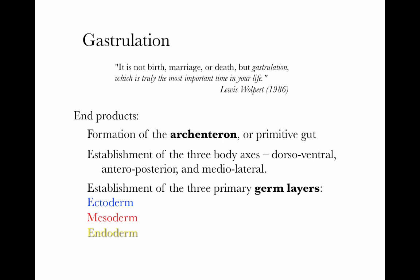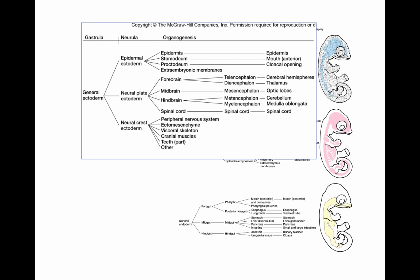Let's quickly go over the adult structures each germ layer gives rise to. Ectoderm primarily gives rise to the outer covering of the body — the epidermis of the skin — the end portions of the gut tube exposed to the environment, such as the mouth opening and the anus or cloaca. It also gives rise to the entire central nervous system, the brain and spinal cord, and is the source of neural crest cells.